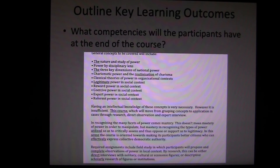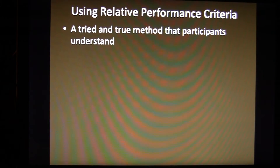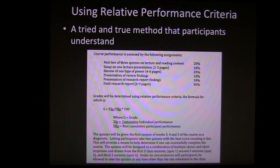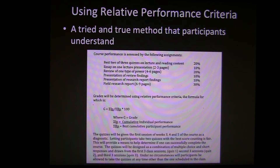What I do is break down these elements and how they will be assessed. I use a relative performance criteria — it is a tried and true method that participants understand. First you lay out your assessment points. You'll see a total of eight assessment points. Three of them are quizzes; I take the best two of three. That allows for people to stumble at the gate and still get it and then perform well. I don't do extra credit — I don't see that as being particularly fair to the entire class.